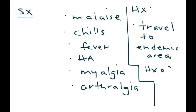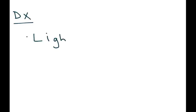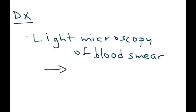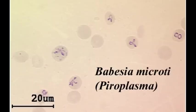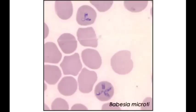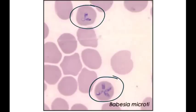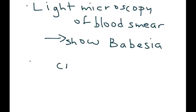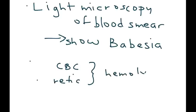A history of a tick bite, if the patient can remember or is aware of it, is also important. The diagnosis of Babesiosis is done by examining the red blood cells — you look at a blood smear under a microscope, which will show the Babesia. A CBC and reticulocyte count are also important to help detect the hemolytic anemia that occurs.